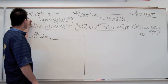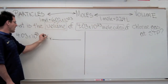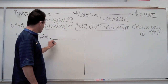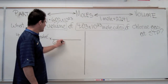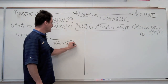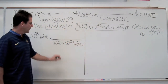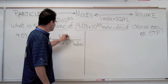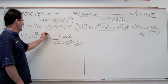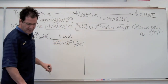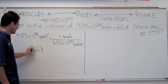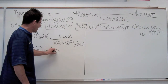We're going to use Avogadro's constant to convert to moles. We have molecules, so we're going to put Avogadro's constant in the bottom of our fraction — 6.02 times 10 to the 23rd molecules. The one mole goes in the top, which is the unit we want to convert into. Molecules cancels with molecules, and we're left with moles.